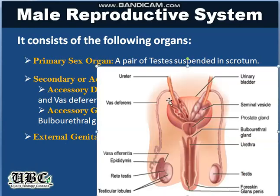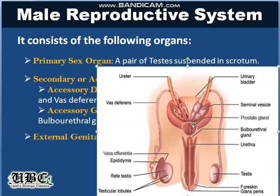Looking at the diagram: from the testes arises the epididymis, through which there is the sperm duct or vas deferens, which makes a loop over the urinary bladder and joins the urethra. The seminal vesicle pours its secretions into the urethra, followed by the prostate gland and the bulbourethral gland. In our next slides, we will have a closer look at the functions of these glands.